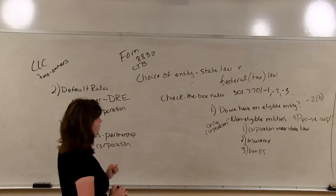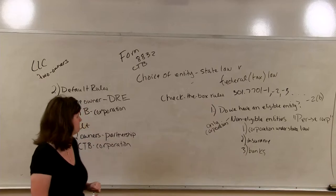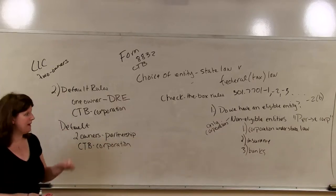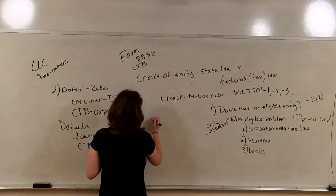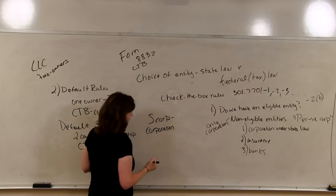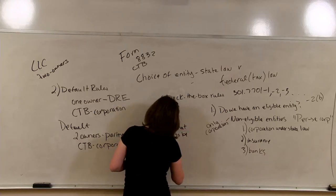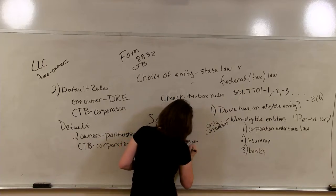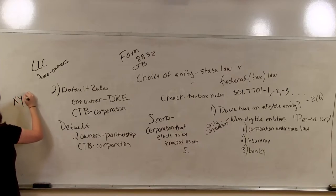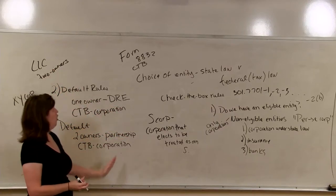There are four options: C-Corp, S-Corp, disregarded entity, and partnership. How do we become an S-Corp? An S-Corp is a corporation that makes an election to be an S-Corp. For example, if we have XY Corp created in Texas — a corporation under state law — is that an eligible entity? No. So there are no check-the-box options. But they might be able to elect S-status, which is actually its own separate subchapter of the code.